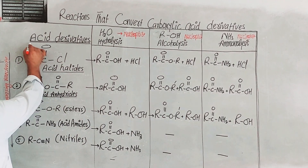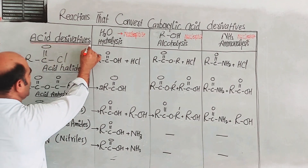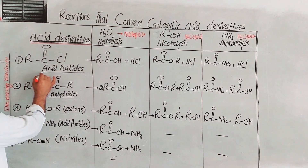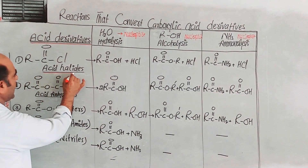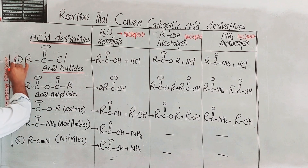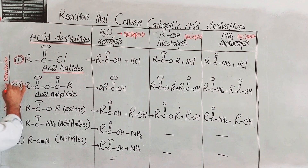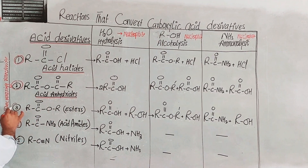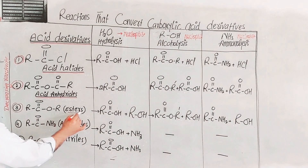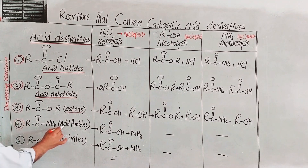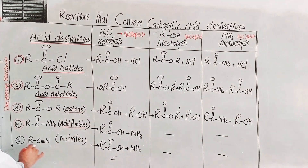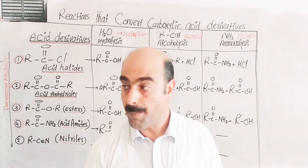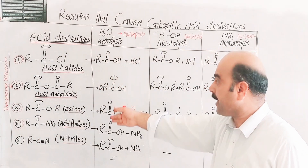The carboxylic acid derivatives are: first, acid halides; second, acid anhydrides; third, esters; fourth, acid amides; and fifth, alkyl nitriles. These are listed on the left side in order of decreasing reactivity.